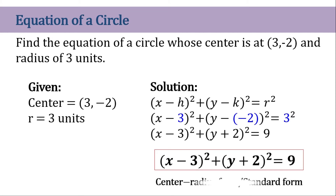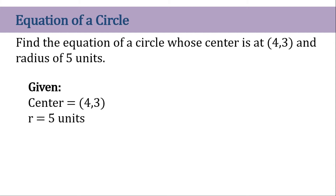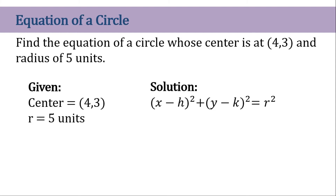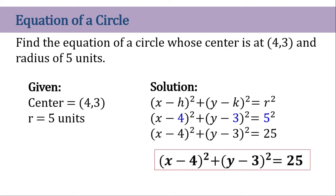Now let's go to another problem. Find the equation of the circle whose center is at (4,3) and with a radius of 5 units. Same method: center is (4,3) and radius is equal to 5 units. Write the circle equation formula, substitute 4 and 3 for h and k, and 5 for r. Then simplify it further. This will now be our circle equation with the center at (4,3) and radius of 5 units.